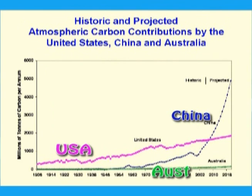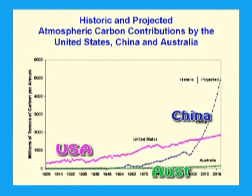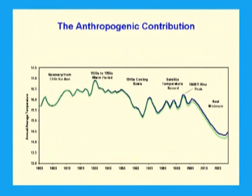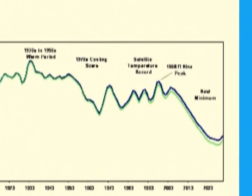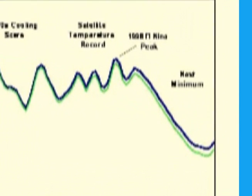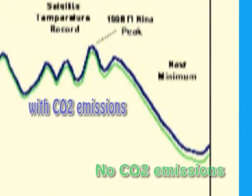This graph shows emissions of carbon to the atmosphere by the United States, China, and Australia, with historic data from 1906 to 2005 and a projection to 2020. Chinese emissions will overtake US emissions in 2008, and then double from the current level by 2016. Per capita emissions by the three countries will be equivalent by 2020. This graph shows what the temperature would be with and without the warming from anthropogenic carbon dioxide. The anthropogenic effect is able to be calculated, though it is very small relative to natural variation.